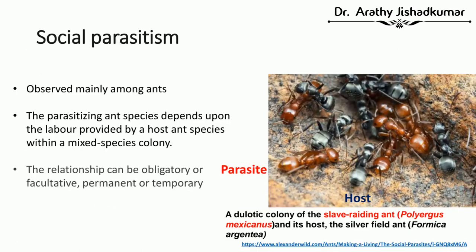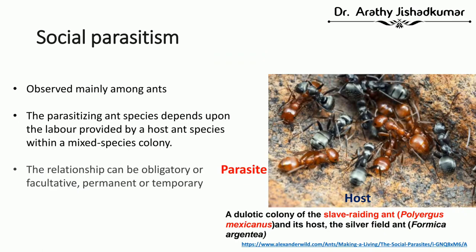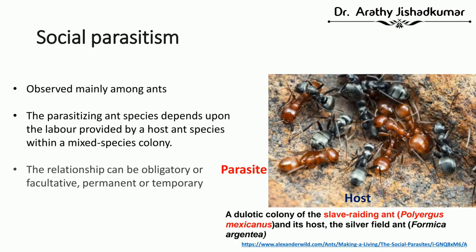The second type is social parasitism, usually observed in ants. When ants live as a colony with different kinds of ants, some ants behave like parasites and take advantage of labor from other ants. This is called social parasitism. The parasitic ant can be obligatory or facultative, and the arrangement can be permanent or temporary.